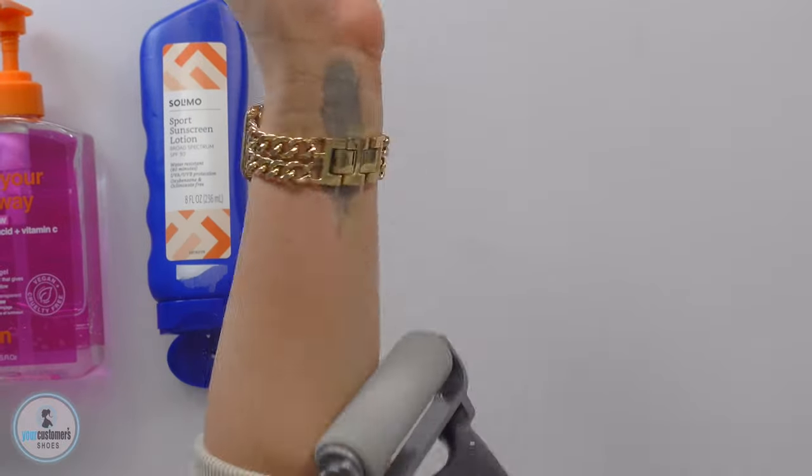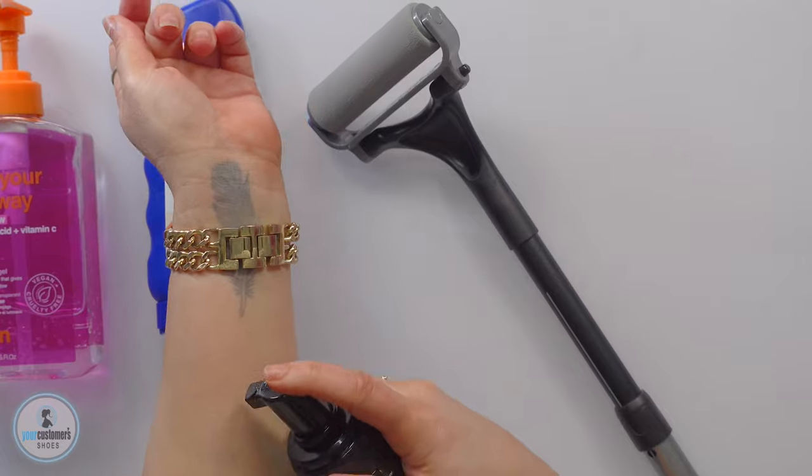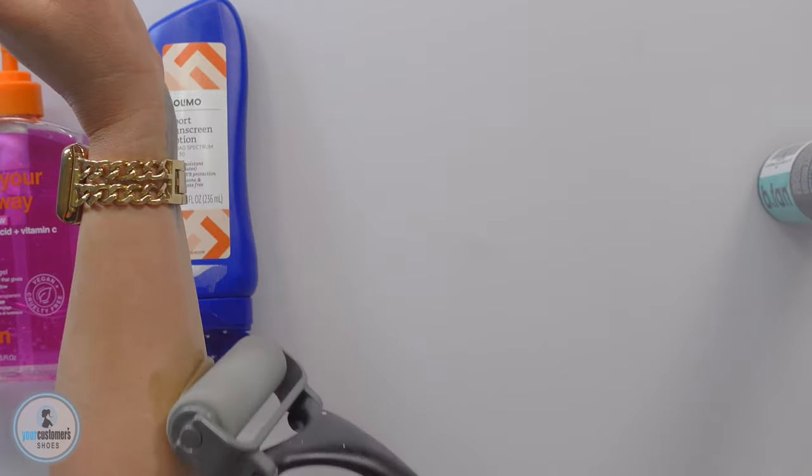And then you just roll it in. I'll take one for the team, get myself dirty for this sunless tanner. Oh, I don't want to get that on my... And y'all see that spot that traditionally goes unprotected because it's impossible to reach?